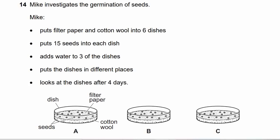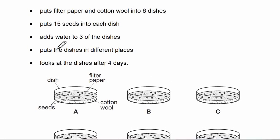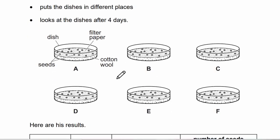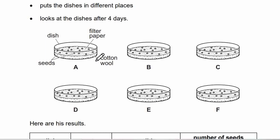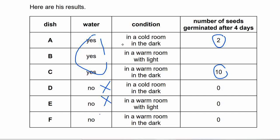Now we are in question 14. Mike investigates the germination of seeds. He puts filter paper and cotton wool into 6 dishes, adds water to 3 of the dishes, puts 15 seeds into each dish, and places the dishes in different places — cold room or warm room, with light or in the dark. After 4 days, the dishes with water all had seeds germinate, while the ones with no water had no seeds germinate.